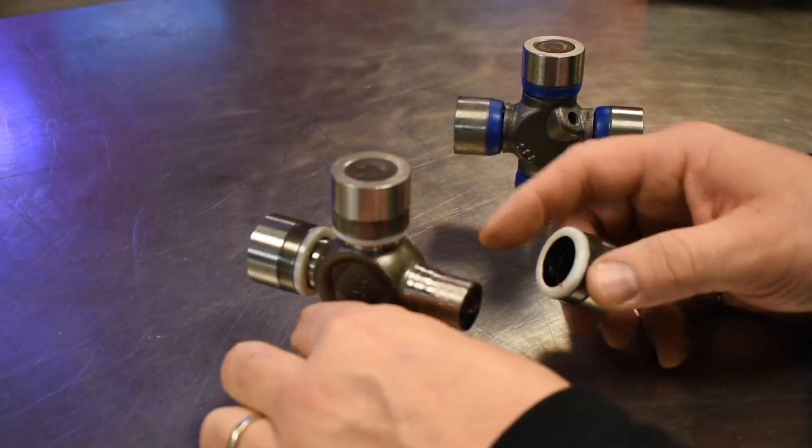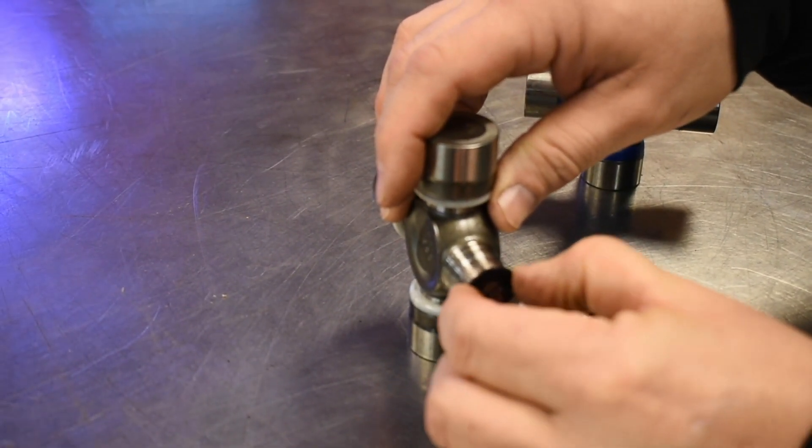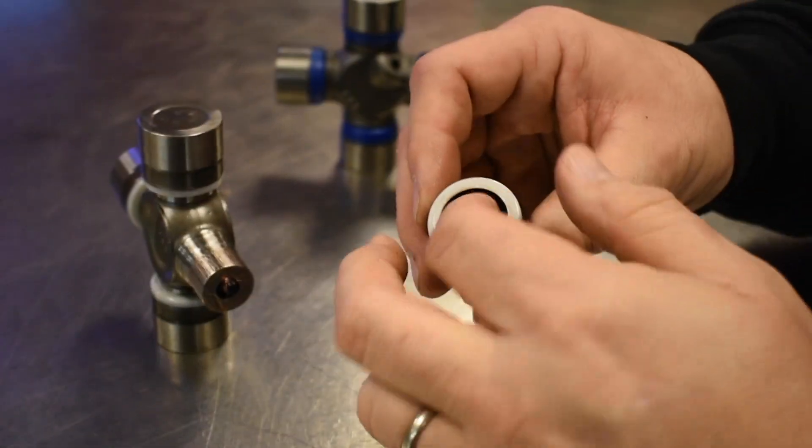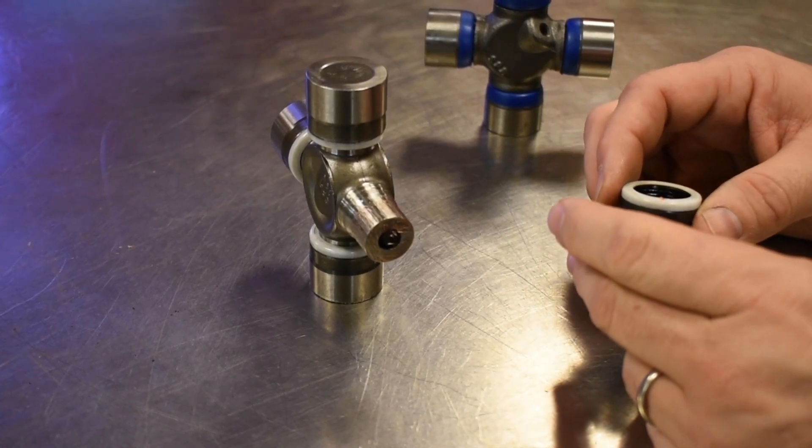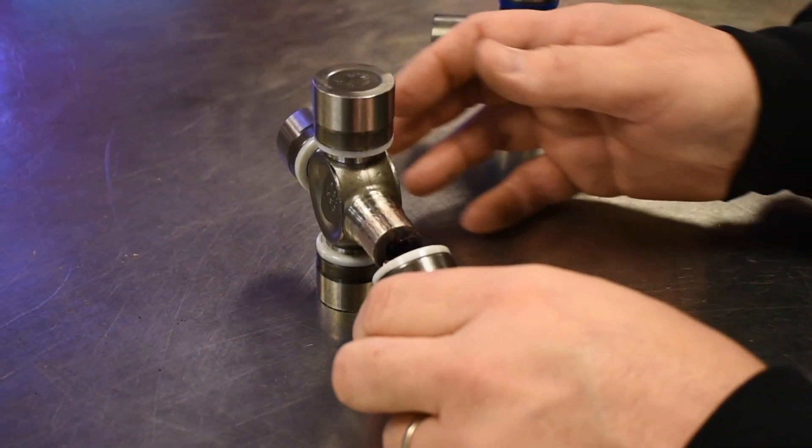The other benefits of the sealed u-joint is they come with a thrust washer in the bottom of the cap. And that thrust washer will keep the end of the trunnion from overheating. Again going to dramatically increase the life expectancy of the universal joint.